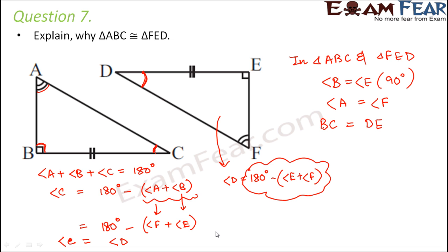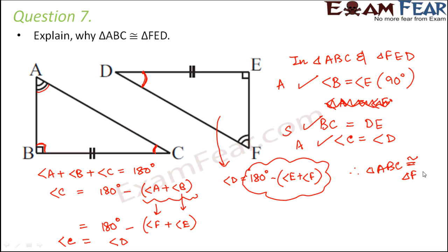So we have proved it mathematically. Since the sum of the three angles of a triangle is 180 degrees and two angles are already equal, the third angle will also be equal. So angle C equals angle D. Now with angle A equal to angle F (A), BC equal to DE (S), and angle C equal to angle D (A), we can say that triangle ABC is congruent to triangle FED by ASA criteria. It is very important to understand that for ASA you need the side included by the two angles — here we first proved angle C equals angle D, and then established congruency by ASA.